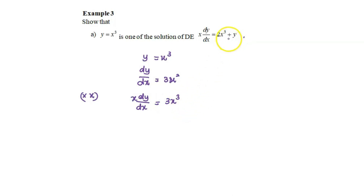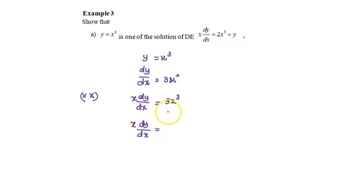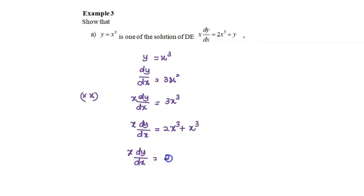Referring back to the differential equation, the right hand side is 2x cubed plus y. We have 3x cubed on the right hand side, so we can break it into 2x cubed plus x cubed. Therefore, x dy over dx can be written as 2x cubed plus y, since y equals x cubed.